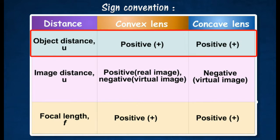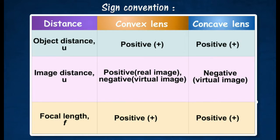For SPM level, the distance u for a convex lens and a concave lens is always positive.